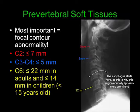At the C5-C6 level, there's a natural slight increase in the size of the prevertebral soft tissues, which is normal because the esophagus starts in this region.